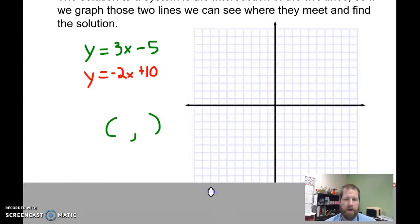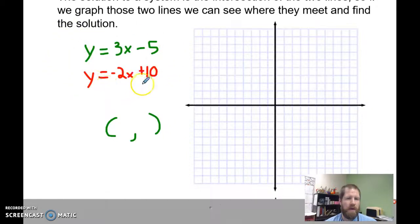When we have them in slope-intercept form, y = mx + b, that should be fairly straightforward to graph. We start by graphing our y-intercept. So this first one is at negative 5, and the second one is at positive 10. Then we can walk it down using our slope.